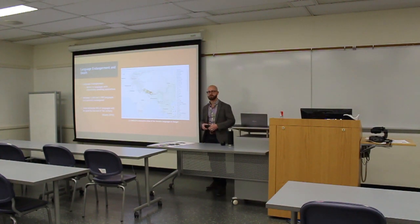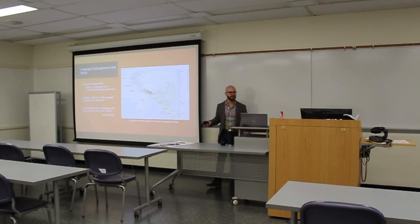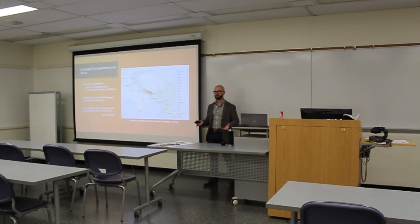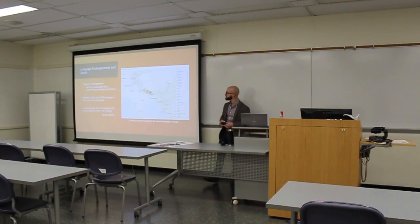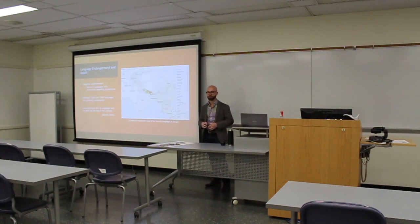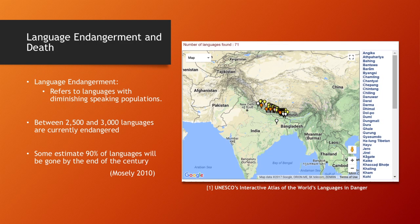Some rather striking statistics surround languages today. It's really hard to calculate how many languages are in the world — it really depends on how you define a language — but generally speaking, it's somewhere between 5,000 and 7,000. Of those, between 2,500 and 3,000 are considered endangered, in a place where they may no longer exist in the near future. Some drastic estimates would say that by the end of the century, we might see 90% of languages go away.